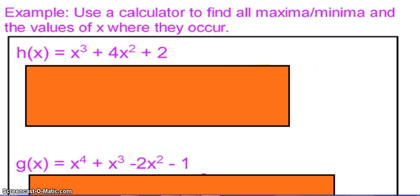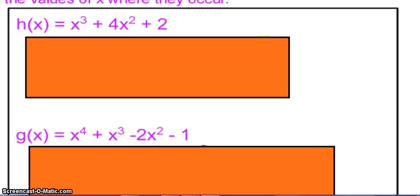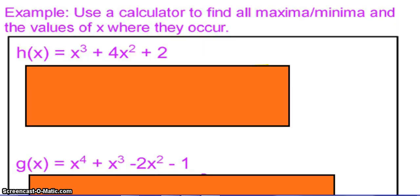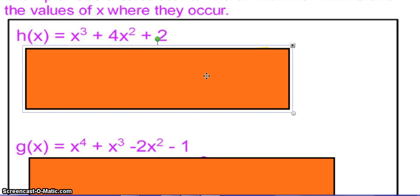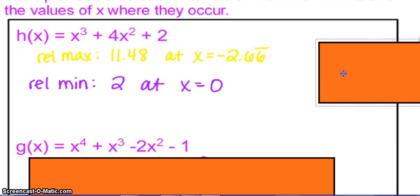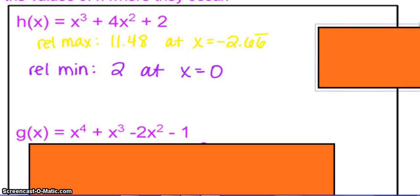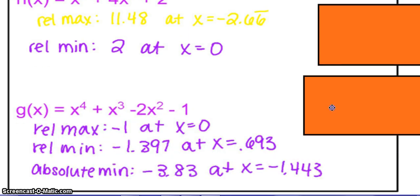For this last one, I'm going to ask you to pause the video. Use a calculator to find all maximums and minimums and the value of x where they occur. Remember, the y value is the actual maximum or minimum, and the x tells you where. Pause the video and work those out. Hopefully you took the time to do that — here are your answers. Rounding to three decimal places when you can is preferred. Maximums occur changing from increasing to decreasing. Minimums occur changing from decreasing to increasing.